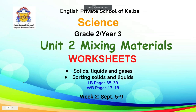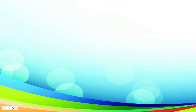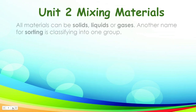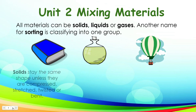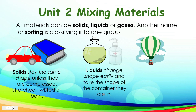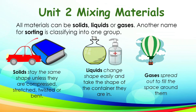Hello, future scientists. In Unit 2, Mixing Materials, we have learned that materials can be solids, liquids, or gases, and know how the properties of solids and liquids are different. Through this lesson, you sorted materials into groups — solid, liquid, and gases — by making observations.